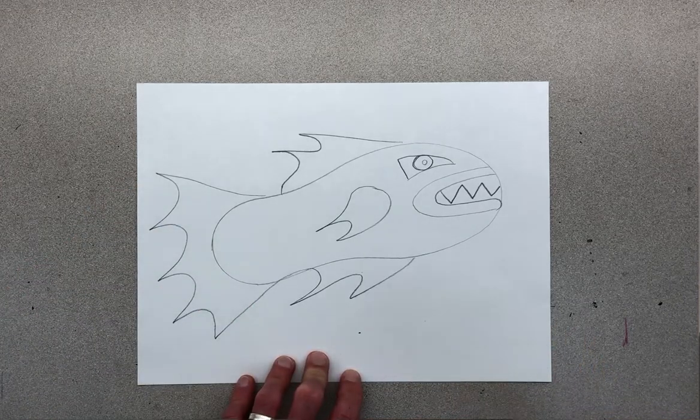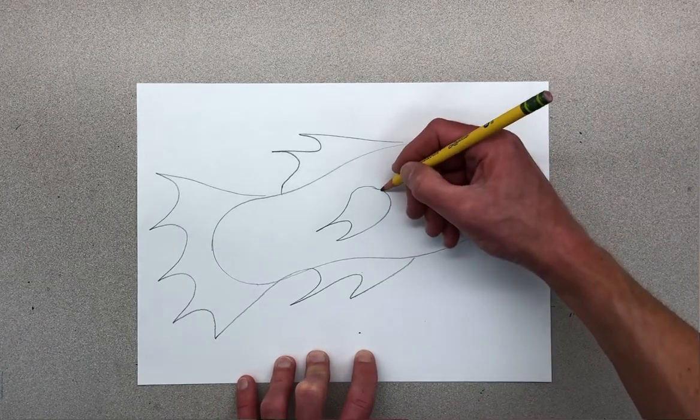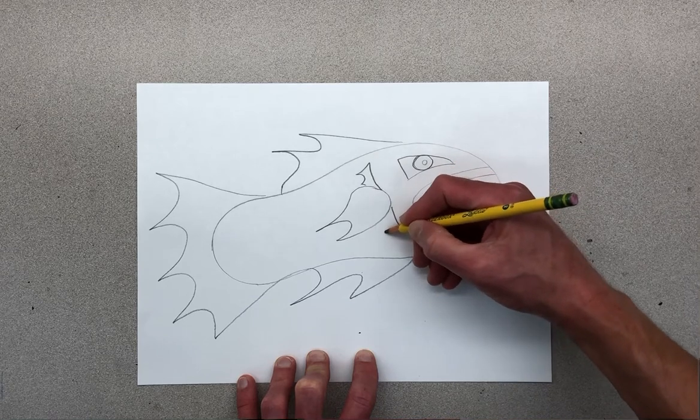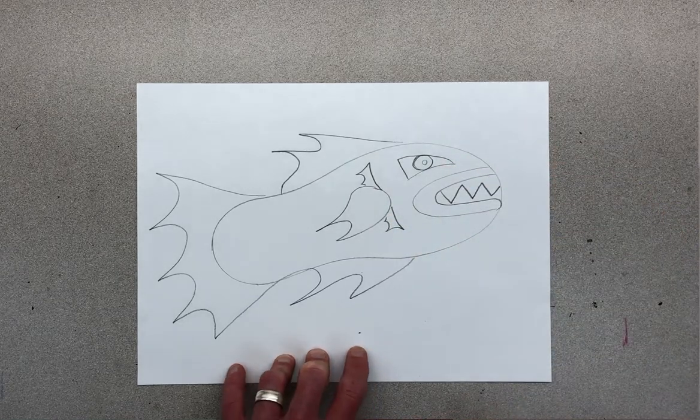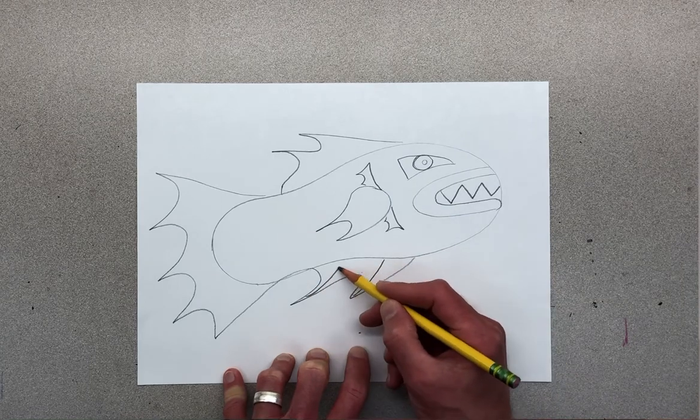Then when I have the fins done, I'm gonna think about extra details. In order for a fish to breathe underwater I'd probably do some gills. I would probably do some lines on these fins. Often fins have lines, that's gonna allow me to do some patterning.